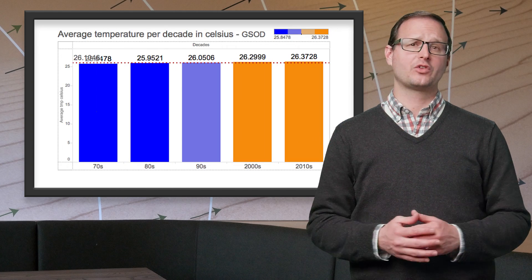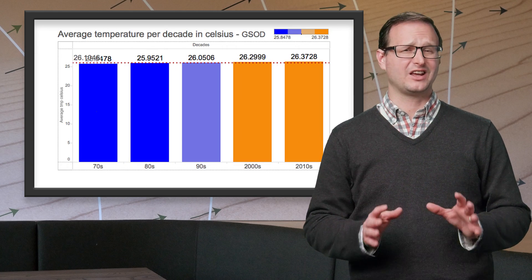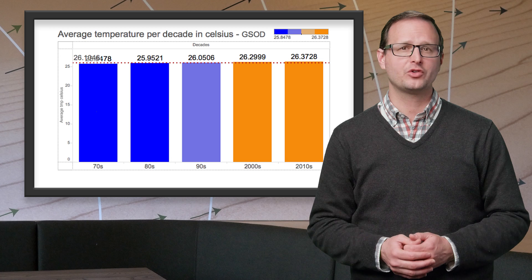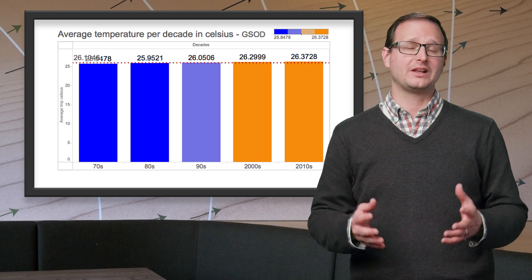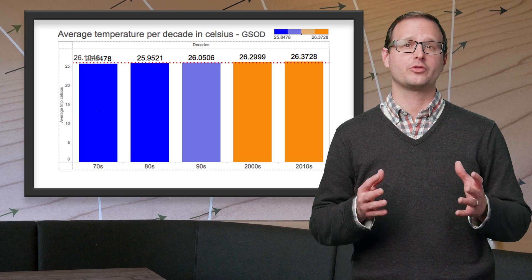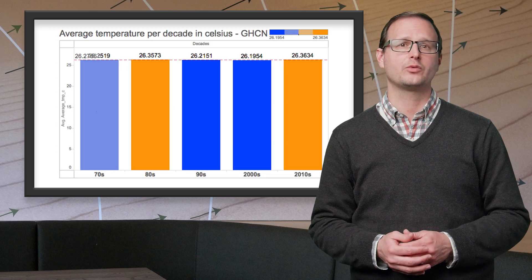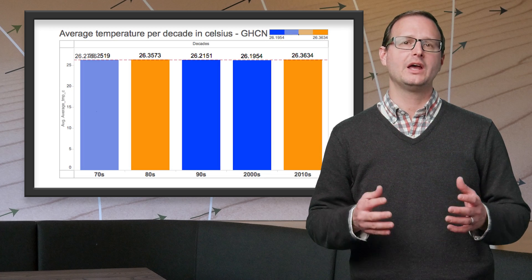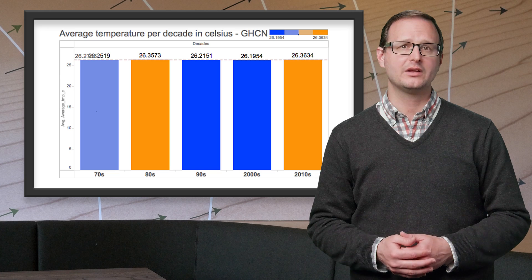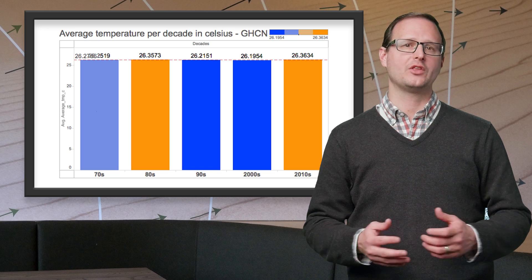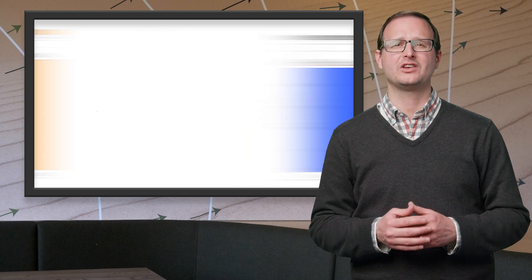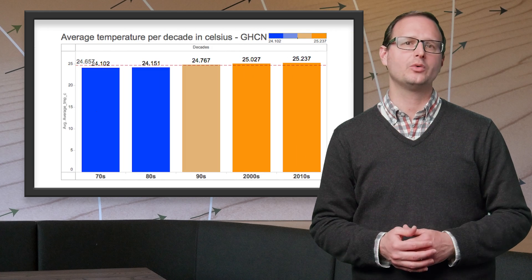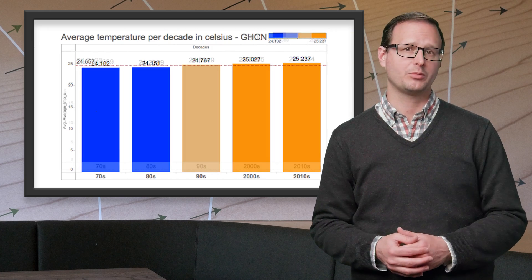When we reach the tropics, things get interesting. These graphs show that the average temperature has remained fairly constant across both data sets, with an average increase of 0.31 and 0.28 degrees per decade in the northern tropics and just 0.19 and 0.28 in the southern tropics.